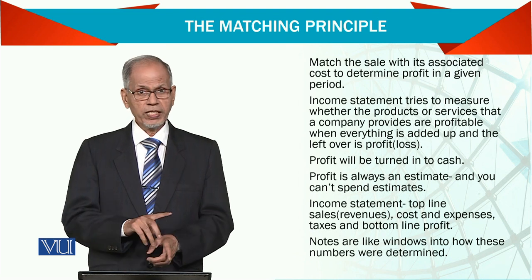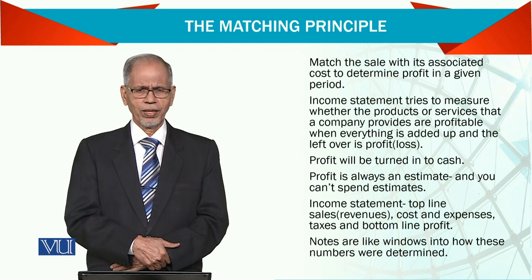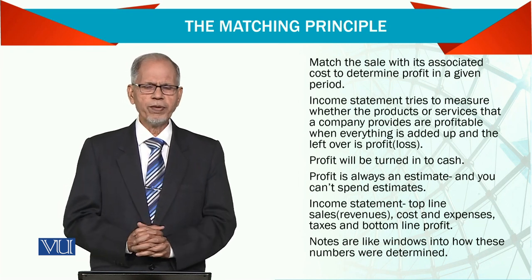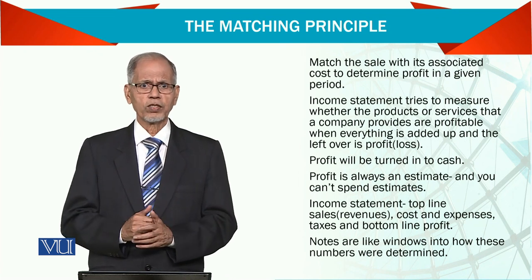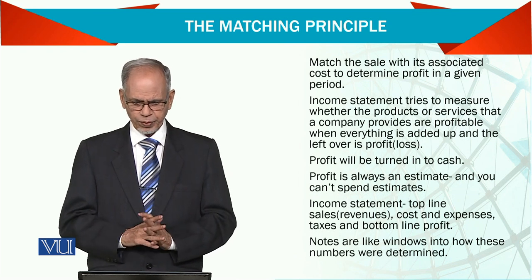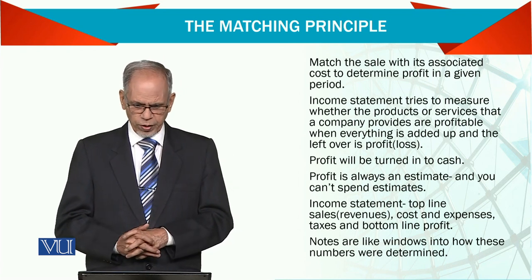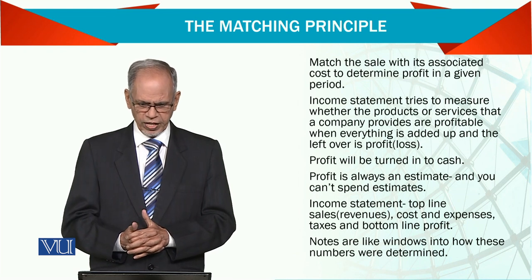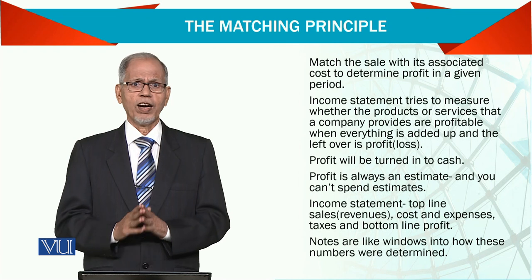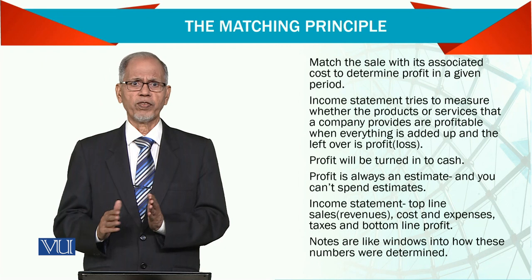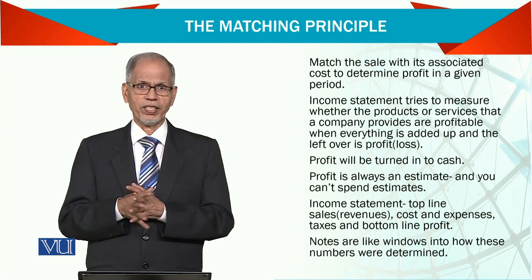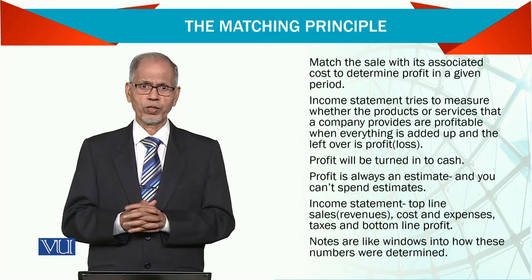Profit will be turned into cash. We are talking here about quality of income — quality of income means your profit is supported by cash flow. Only then can we say you are really making a profit, because in profit we make adjustments here and there, and if it is not being supported by cash generation, then something is wrong. The income statement's top line is sales and the bottom line is profit: top line is sales, revenue, costs and expenses, taxes, and bottom line is profit. Notes are like windows into how these numbers were determined — for example, for the revenue figure, the notes explain how that revenue was earned, what method was used to recognize it. That will also be given in the notes to the accounts.